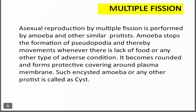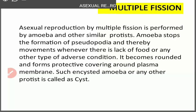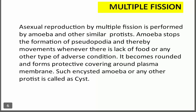Multiple fission is a type of asexual reproduction in amoeba and other protists. It occurs only under adverse conditions or when abundant food material is not available. Under such conditions, amoeba stops forming pseudopodia — its locomotory organ — to conserve energy, since there is no food available. Movement is stopped whenever there is a lack of food and adverse conditions.